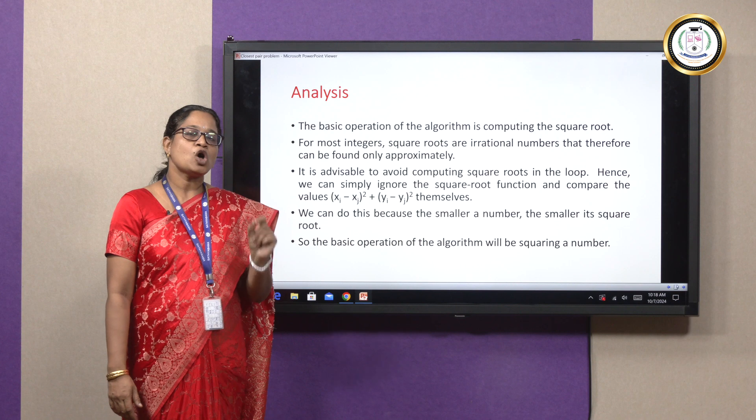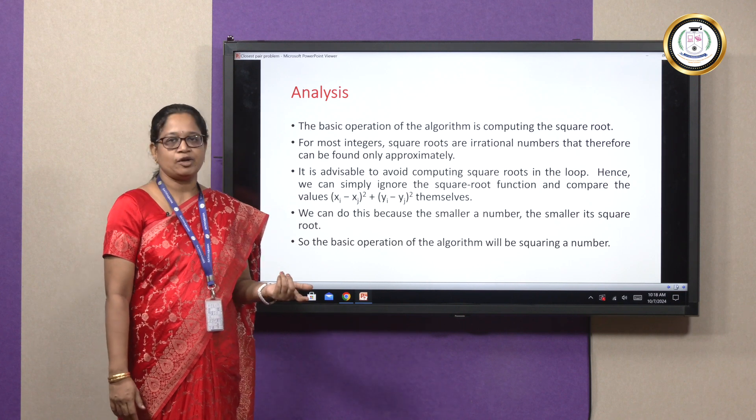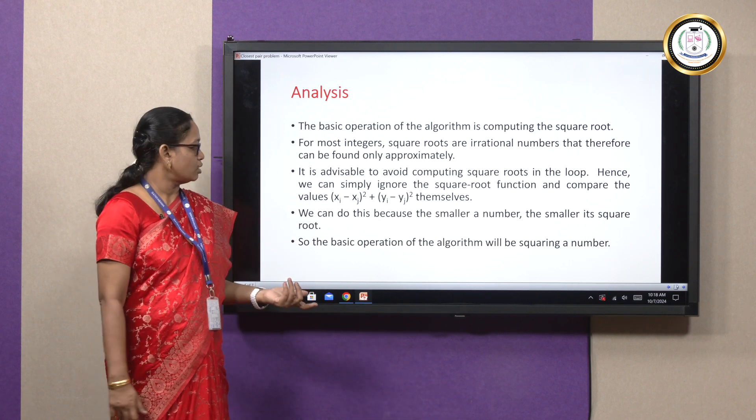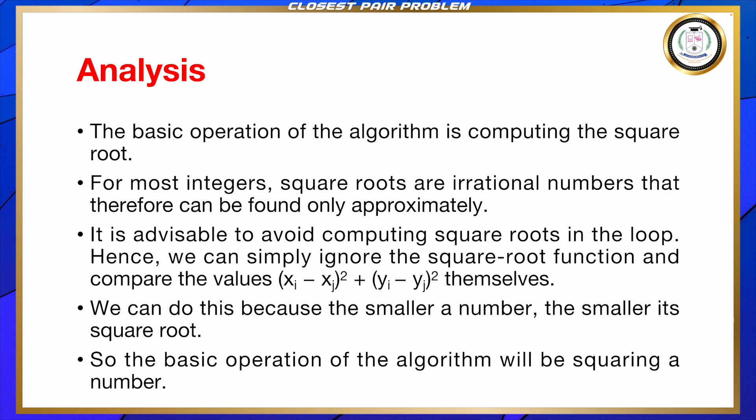We do this because the smaller a number, the smaller its square root. It is enough if we just compute the number itself. The basic operation of the algorithm is just squaring a number in this algorithm.